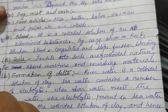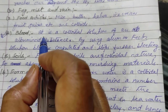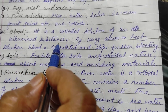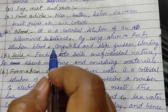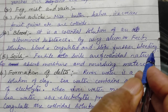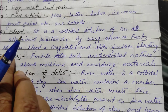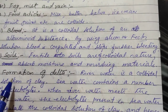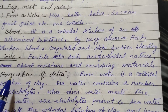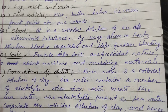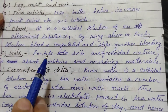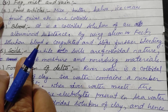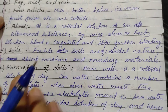Blood is a very important topic that generally comes in examinations. Blood is a colloidal solution of an albuminoid substance. By adding alum or FeCl3 solution, blood is coagulated and stops further bleeding. The question asked is: why do we use alum or FeCl3 solution after a shave or if there is a cut? The answer is that FeCl3 or alum has ions which coagulate and clot the blood, and the bleeding stops.